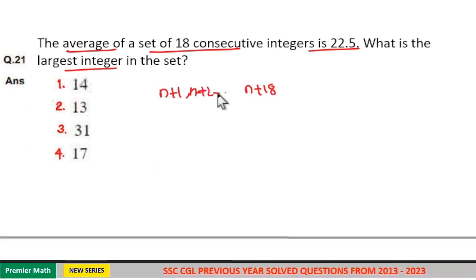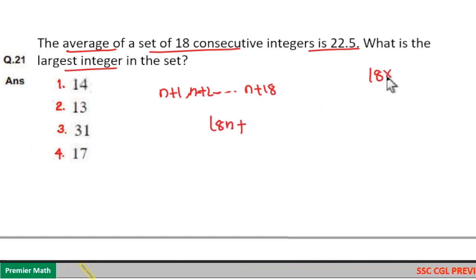Now here, the sum of these numbers is equal to 18n plus 1 to 18. The sum is equal to 18 into 19 divided by 2. So 9 into 19 is equal to 90 plus 81, which is 171.